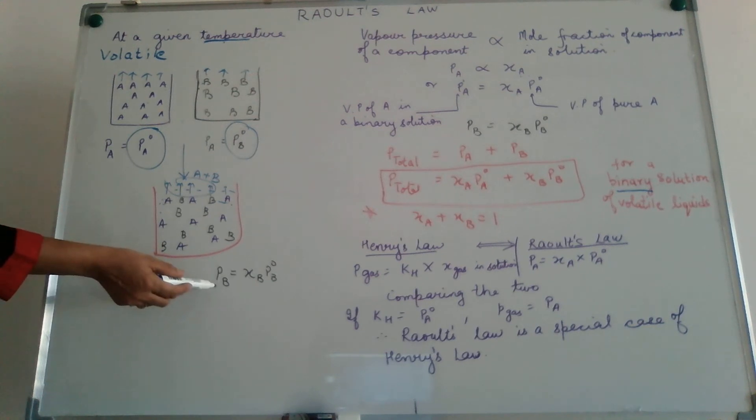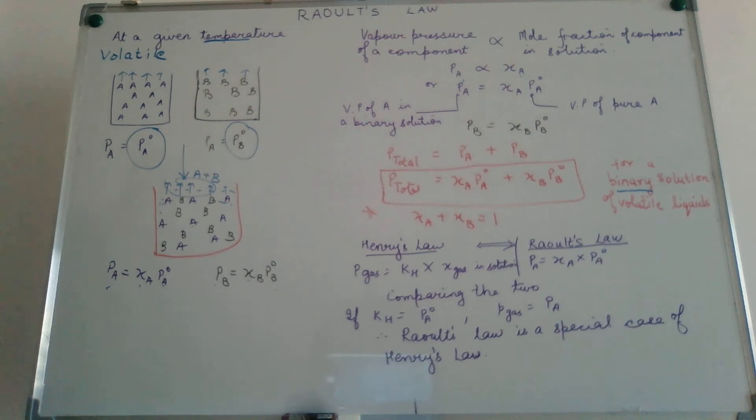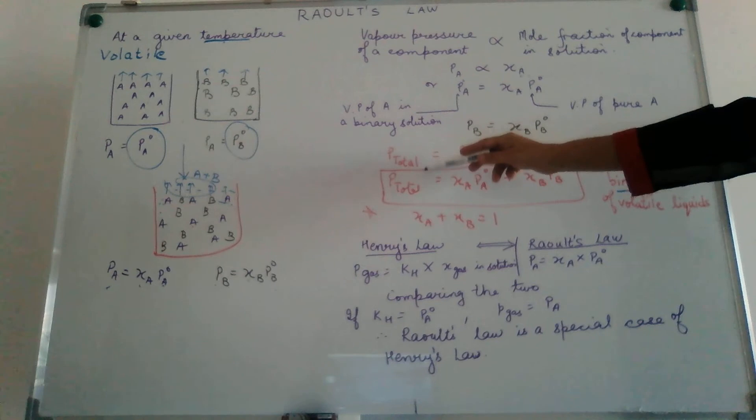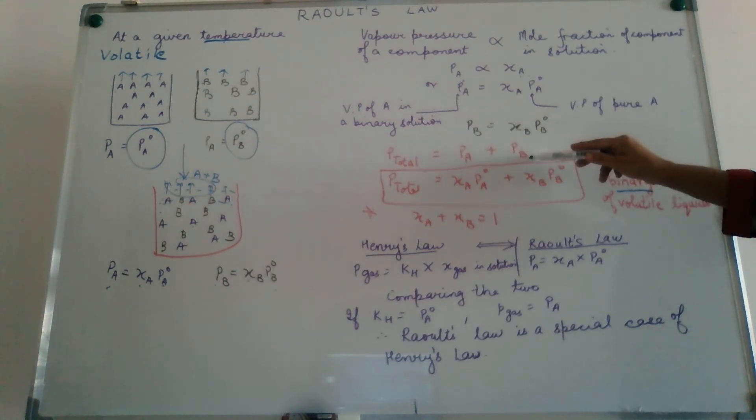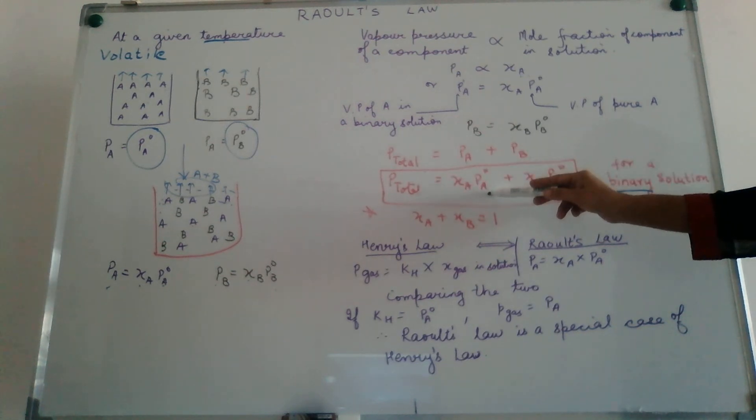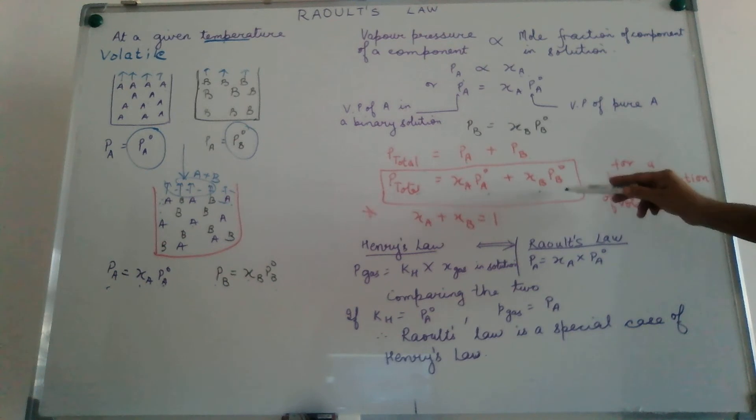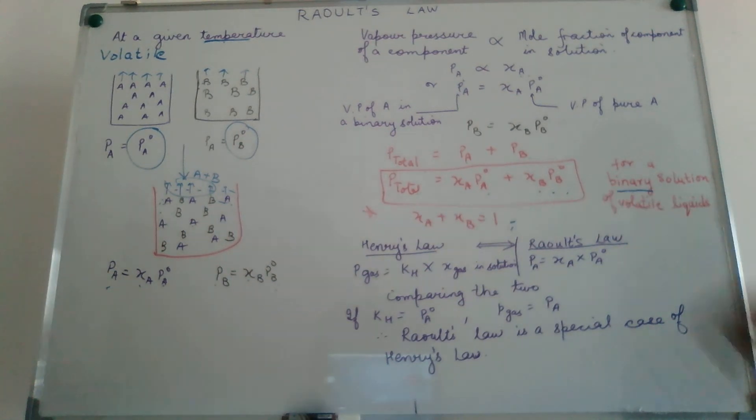Same way, PB, that is the vapor pressure of B in this mixture, is mole fraction of B into the vapor pressure of pure B. Combining the two, hence the total vapor pressure is a combination of the vapor pressure of A and the vapor pressure of B. So P total here is XA into PA0 plus XB into PB0. We need to remember that the sum of mole fractions in any liquid equals 1.